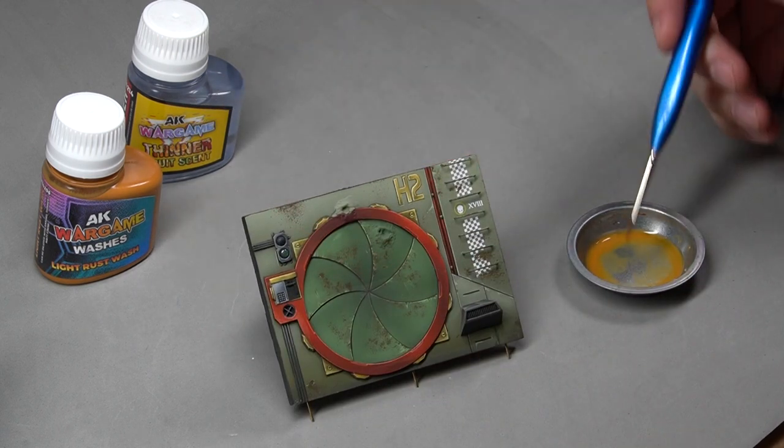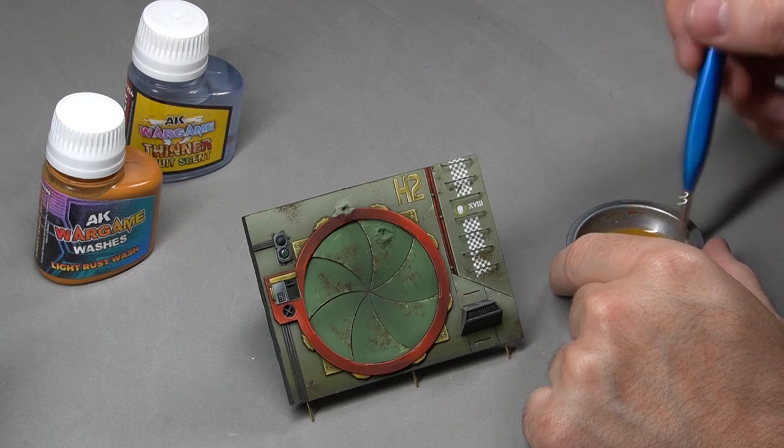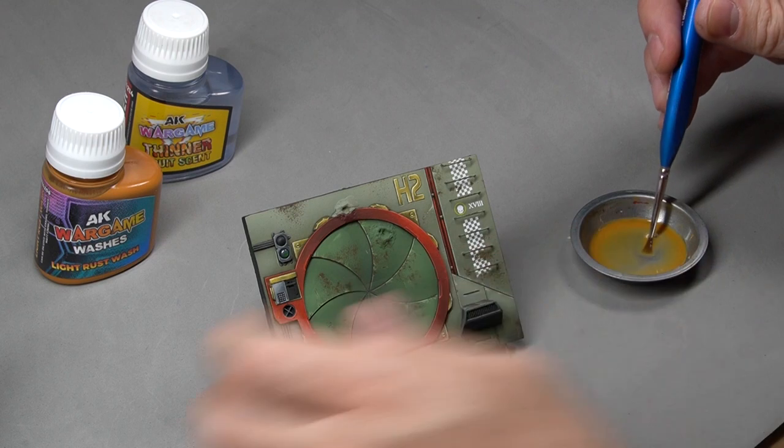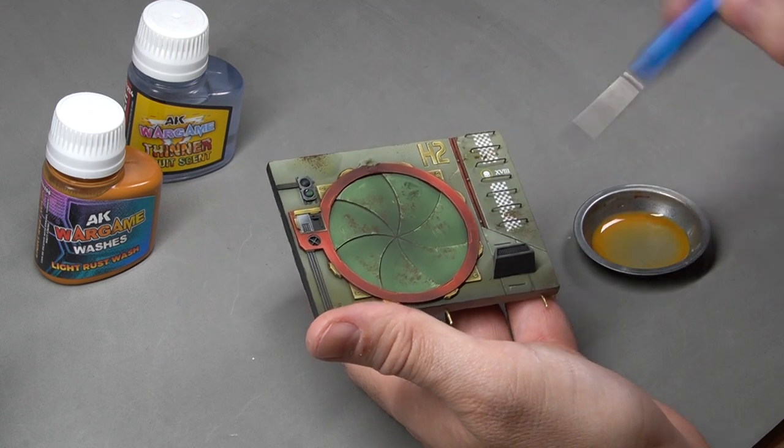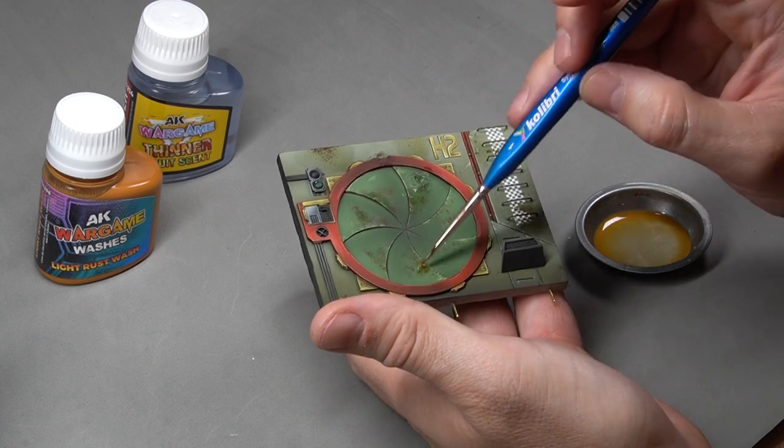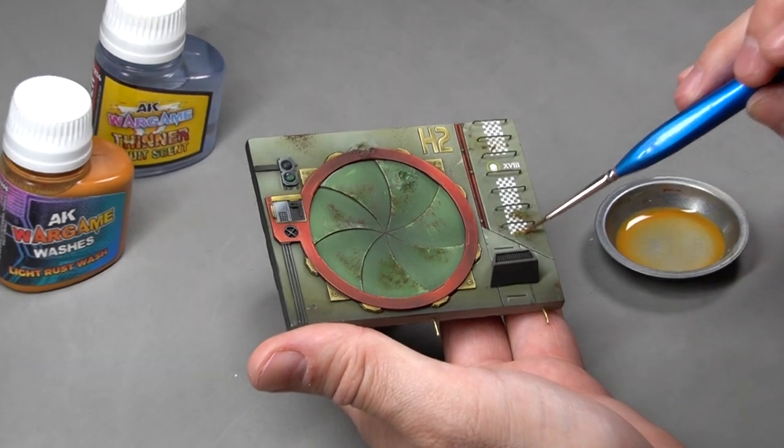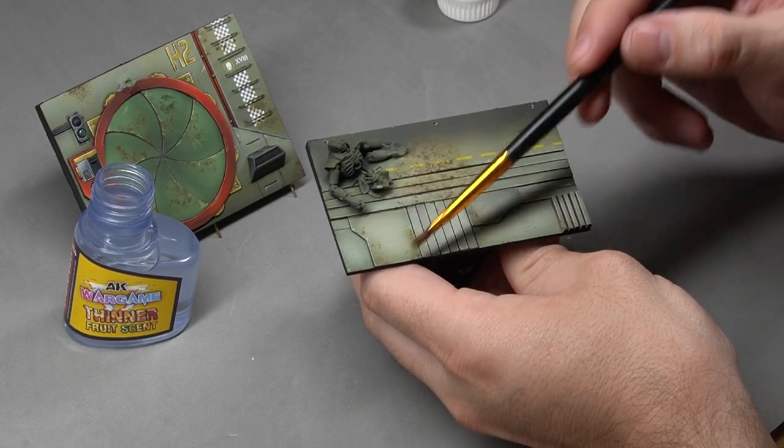We've taken some of the product and added some thinner to a paint cup. This will make it more fluid and the effect will be less pronounced. As you can see, the effects are very subtle. You can see the yellowish stains typical for rusted areas.